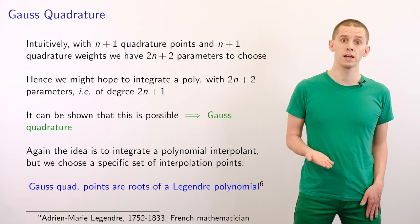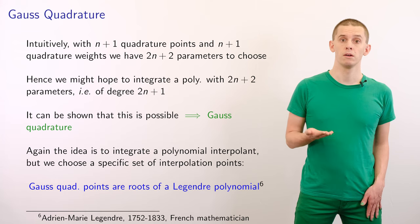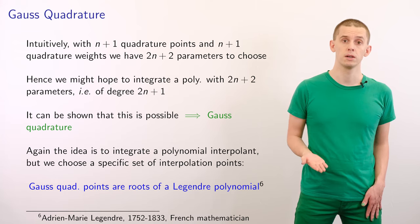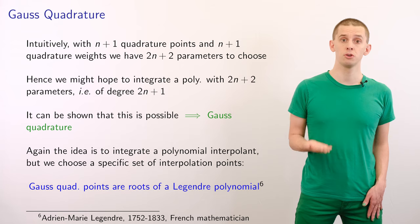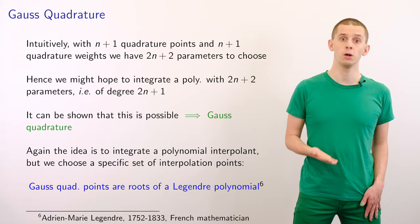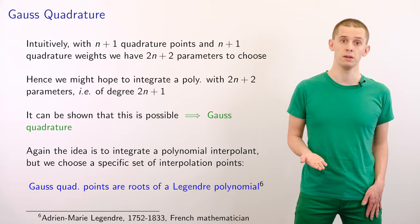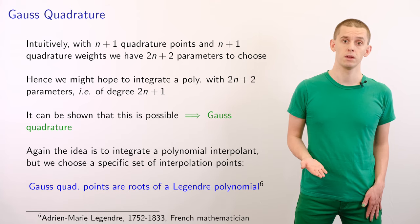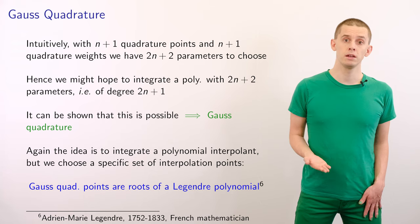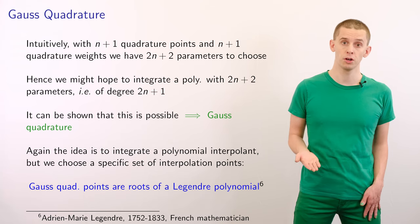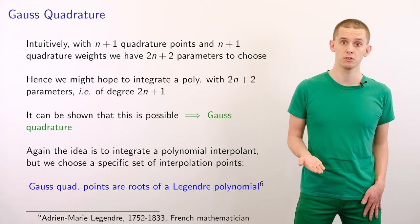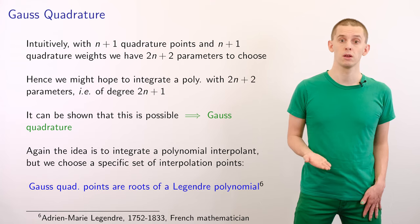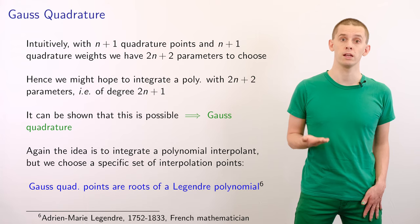This would result in more than a doubling of the degree of polynomial that we can integrate exactly. However, amazingly, this can actually be achieved, and this leads to Gauss quadrature. It's really remarkable that we can actually attain this bound and choose these n+1 points to get almost double the polynomial degree that we can integrate exactly. The idea is to choose a set of interpolation points and integrate a polynomial interpolant. In this case, we'll choose a specific set of interpolation points, and our Gaussian quadrature points will be chosen to be the roots of a Legendre polynomial.